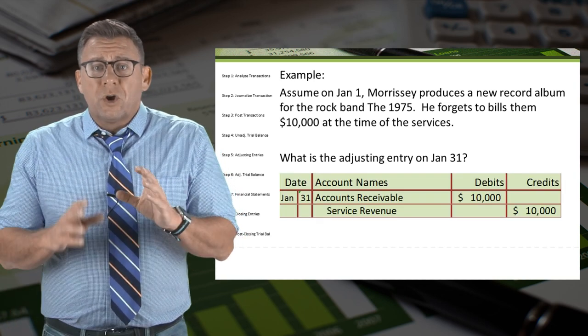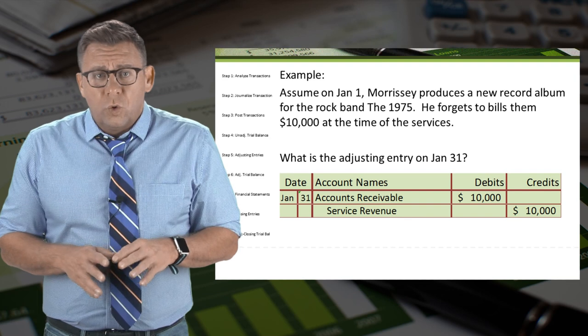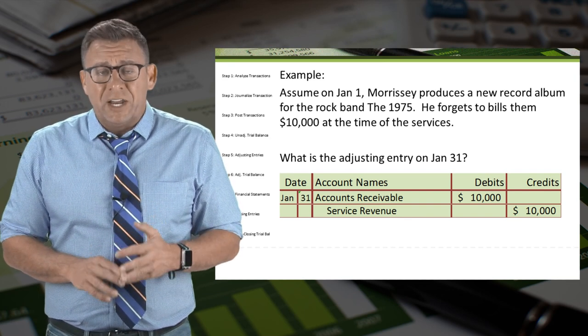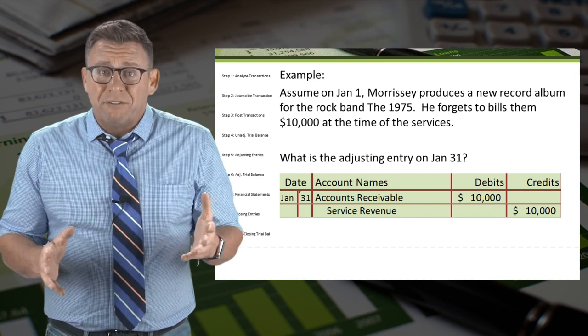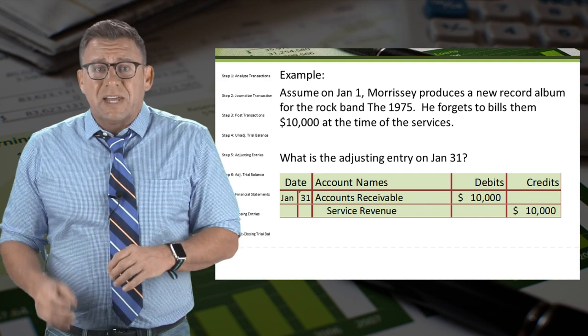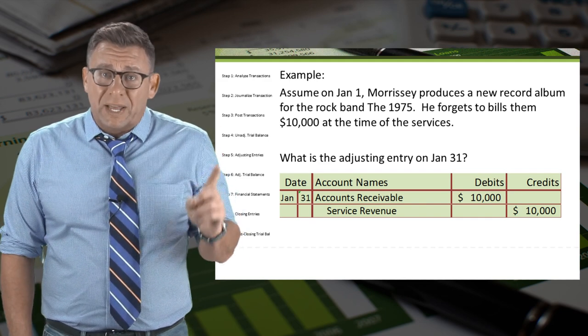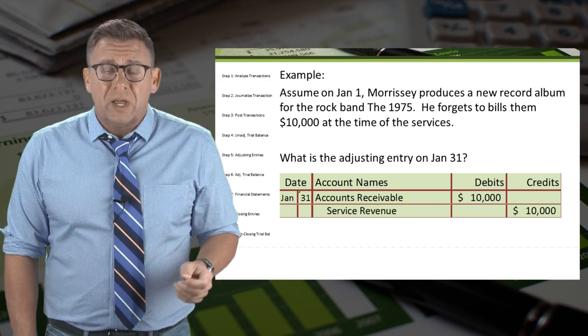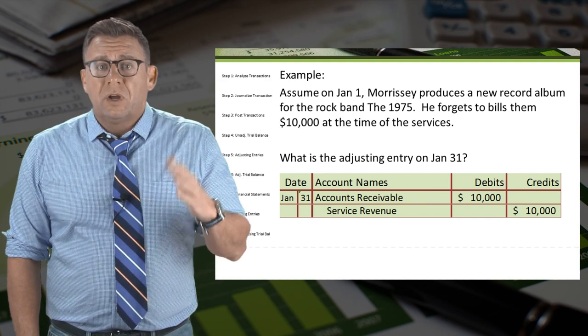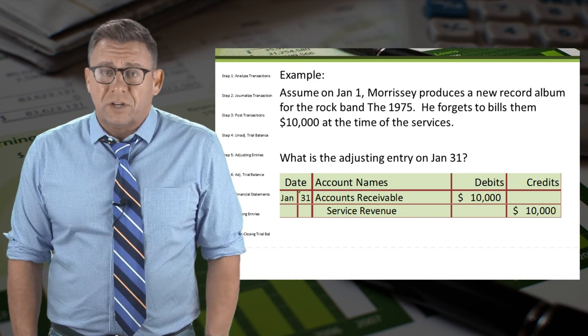When we record revenue, we always debit a receivable account and credit a revenue account. In this example, we would debit accounts receivable and credit service revenue for $10,000.